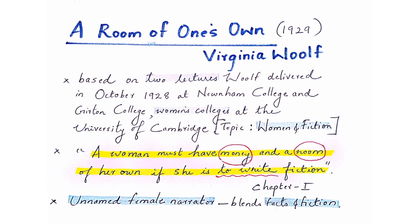The title of the essay comes from one of Woolf's key quotes: "A woman must have money and a room of her own if she is to write fiction." This quote appears in the first chapter of the essay. Woolf stresses that if you expect a woman to write fiction, she should have two things — money and privacy, a room for herself — and this point is discussed throughout the essay.